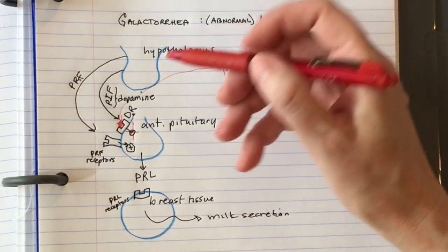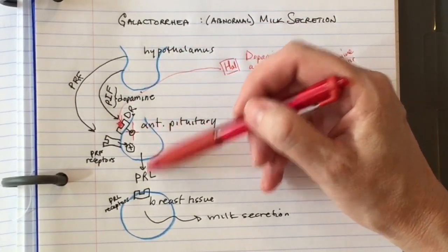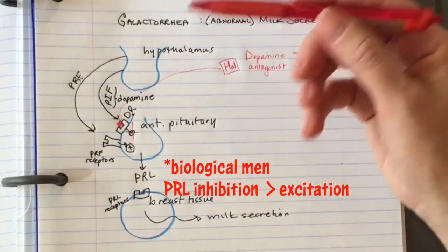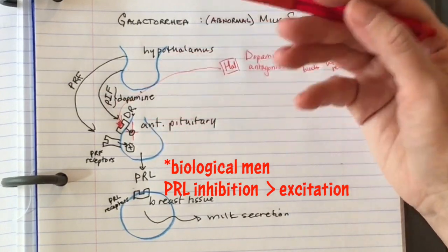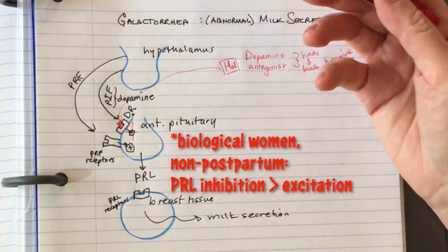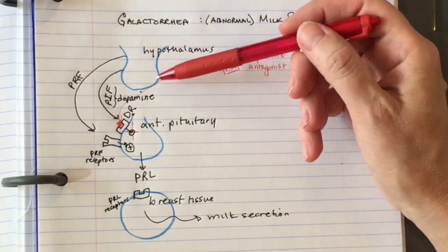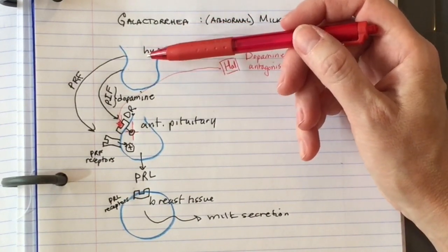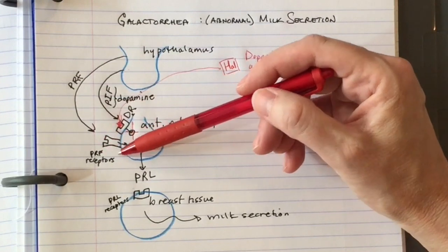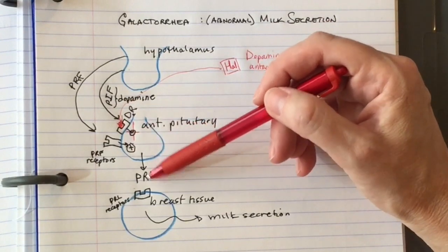Haloperidol blocks the dopamine receptors in the anterior pituitary. Therefore, the hypothalamus can no longer inhibit the anterior pituitary. The hypothalamus normally releases dopamine which inhibits the anterior pituitary from releasing prolactin. Normally, you have more inhibitory action on the pituitary than excitatory action, so dopamine's inhibiting release of prolactin.